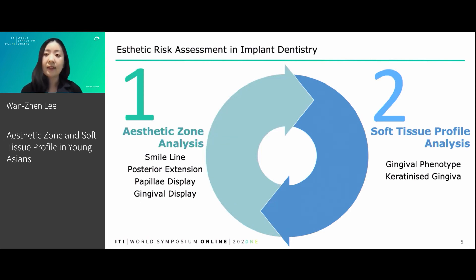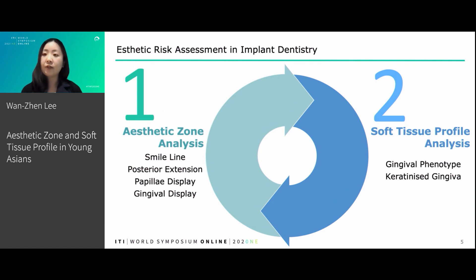One is the aesthetic zone analysis, where we look at the smile line, the posterior extension of the aesthetic zone, the papillae display, and the gingival display. And two, where we look at the soft tissue profile analysis. For that, we examine the gingival phenotype of the patient, and also the width of the keratinized gingiva.